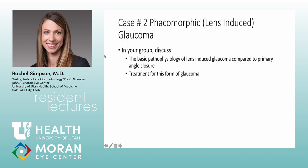Phacomorphic angle closure: the lens itself is so large and swollen that it physically pushes everything forward and closes the angle. The question is whether the primary mechanism is pupillary block or something else. In phacomorphic, it's purely the lens pushing everything forward — there's a component of pupillary block that can develop, but the primary driver is the lens mass itself.